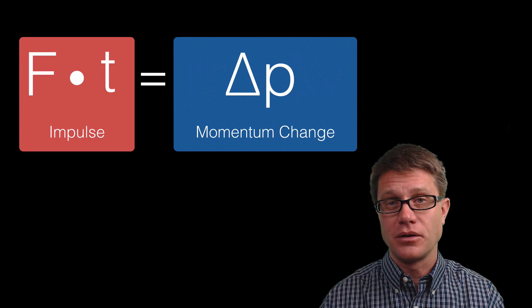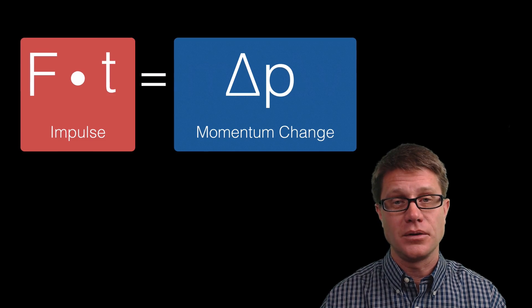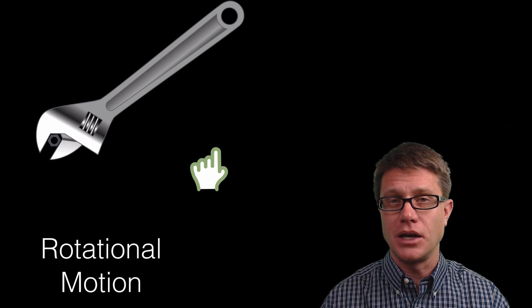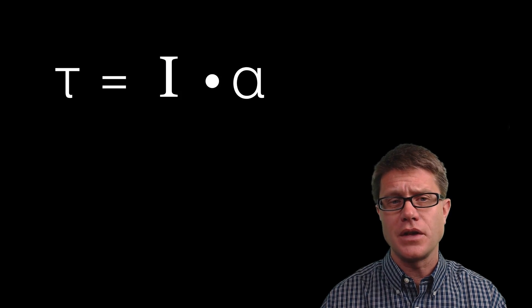That change in P, or the change in momentum, is the impulse. Now if we look at a rotating system like this, where I apply a force like that, it is rotating, let's get to our equations there. We now have a torque.